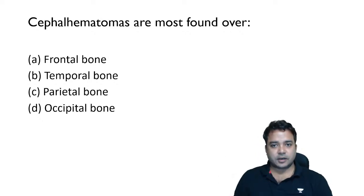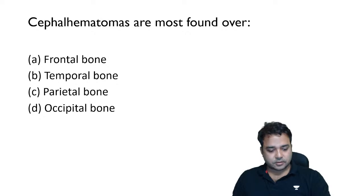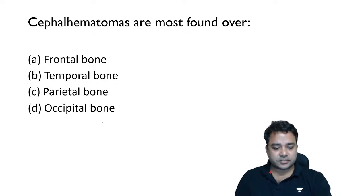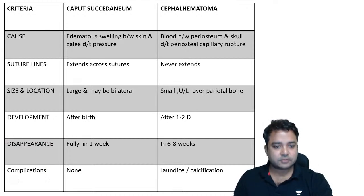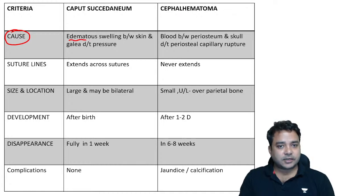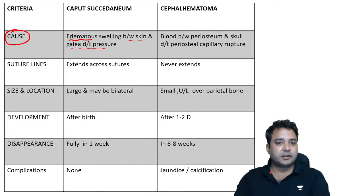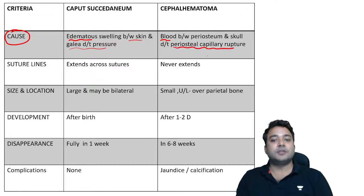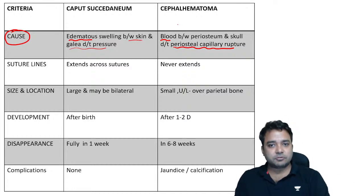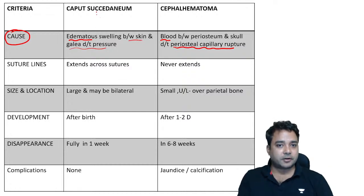Cephalhaematomas are mostly found over parietal bones. Here is a comparison table: Caput succedaneum is an oedematous swelling between skin and galea due to pressure from the presenting part during delivery. Cephalhaematoma is a collection of blood between periosteum and skull due to periosteal capillary rupture — usually caused by instrumental delivery (forceps or vacuum). Caput is common; cephalhaematoma is very rare.